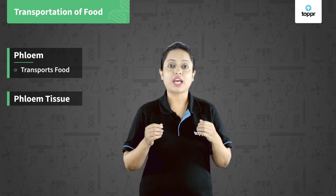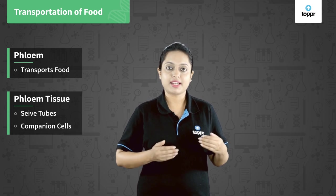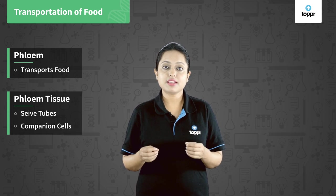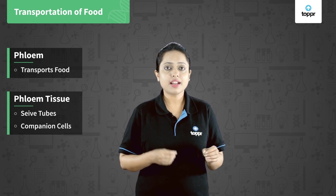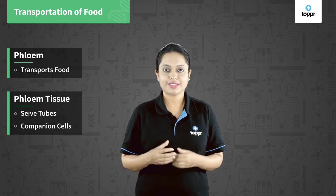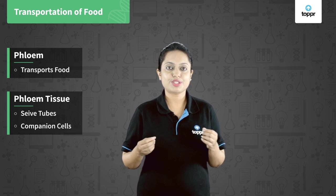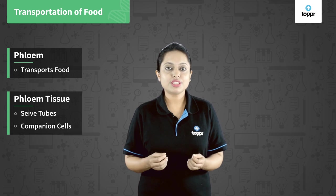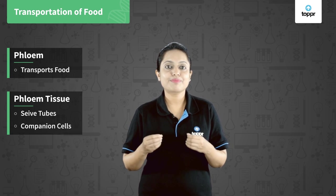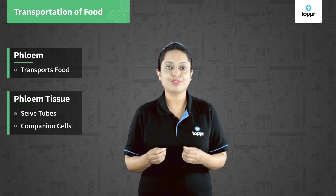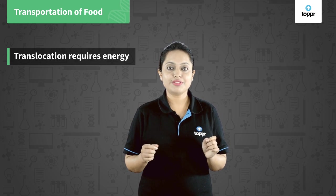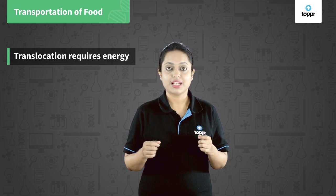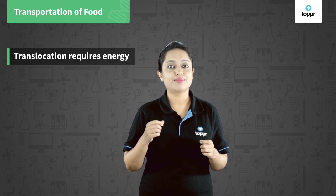The phloem tissue has two types of cells: sieve tubes and companion cells. These cells transport amino acids and other substances to the storage parts of the roots, as well as to fruits, seeds, and other growing organs. For example, sucrose is transported by phloem tissue to the growing buds as they need energy to grow. This transportation of food through phloem tissue is achieved by using energy from ATP, unlike the physical forces used to transport water through xylem tissue.